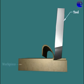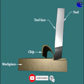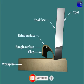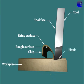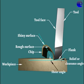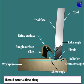The key components include the tool, workpiece, chip, tool face, shiny surface, rough surface, flank, relief or clearance angle, shear angle, and rake angle. The sheared material that flows along the cutting tool face is called chips.